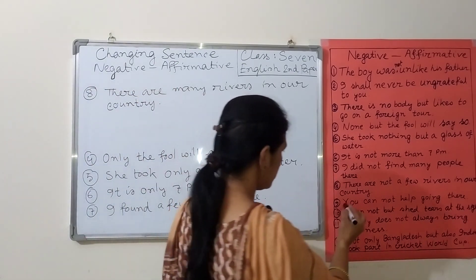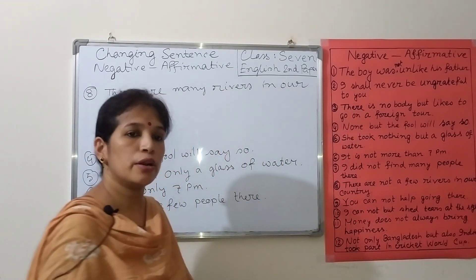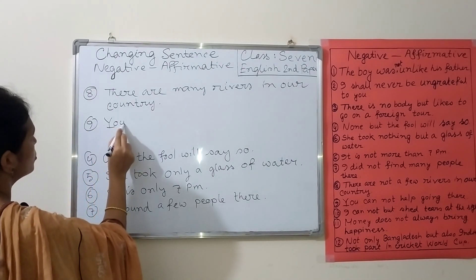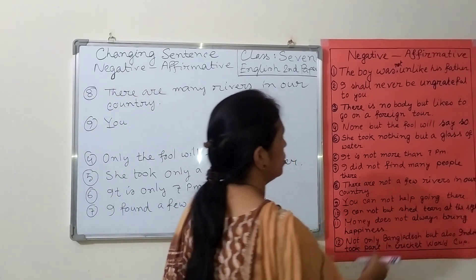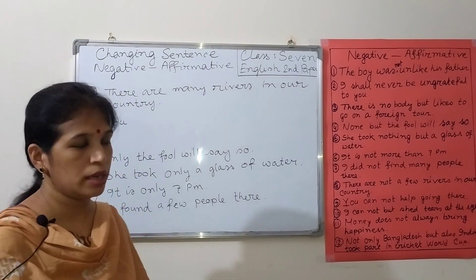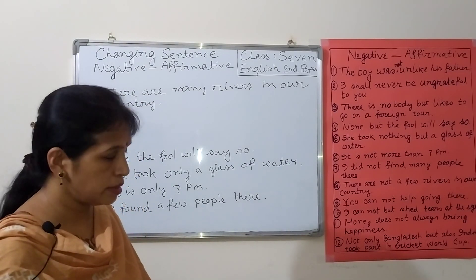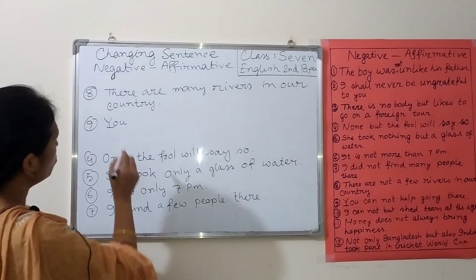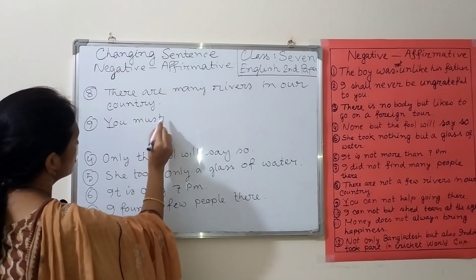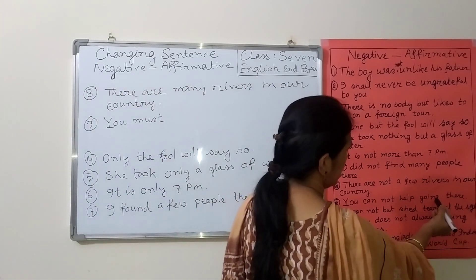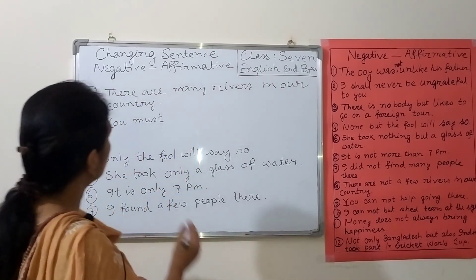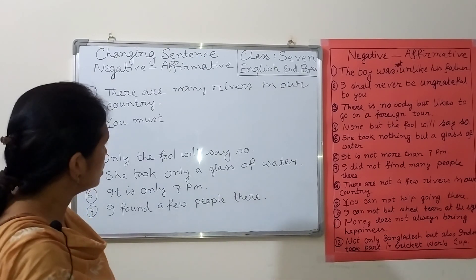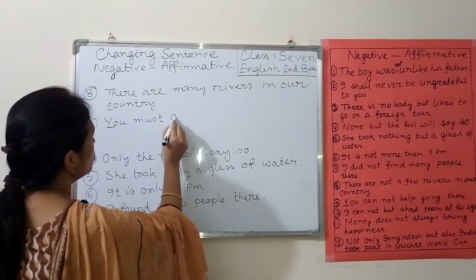Number nine: 'You cannot help going there.' Here we can see the negative sign 'cannot help.' We know that if there is 'cannot help' in a negative sentence, we have to use the modal auxiliary verb 'must' to make it affirmative. The verb is in present participle form 'going,' but after a modal auxiliary verb the main verb must be in base form. So the affirmative sentence is: 'You must go there.'